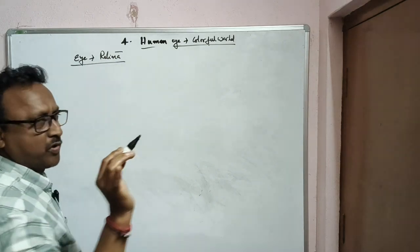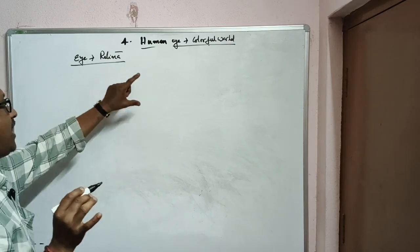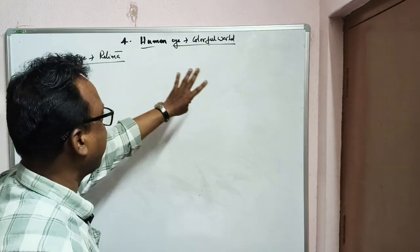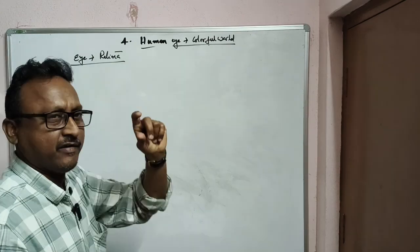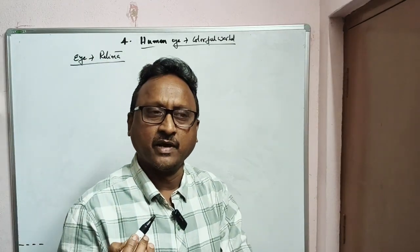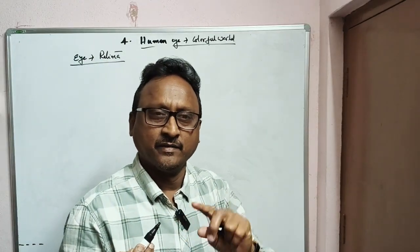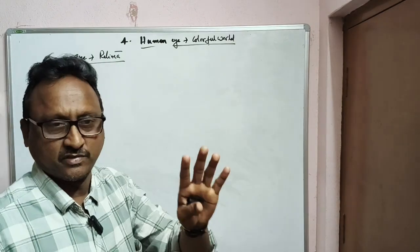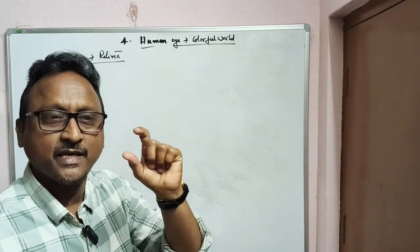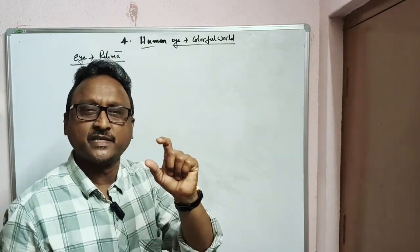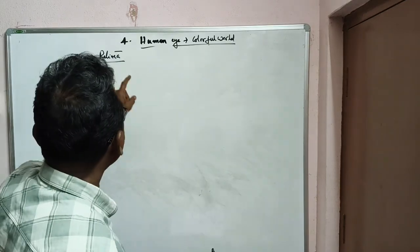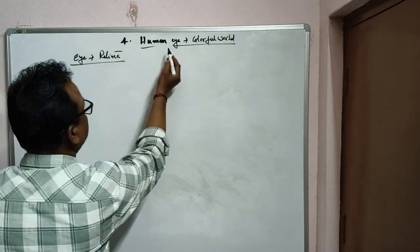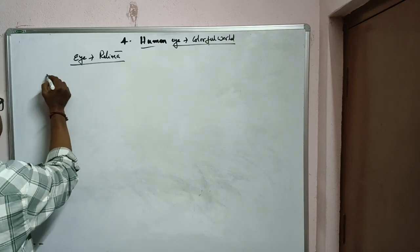From an examination point of view for the polyset examination, the main parts of the eye such as the iris and cornea are important. The main topic in human eye and colorful world is the defects of the eye.